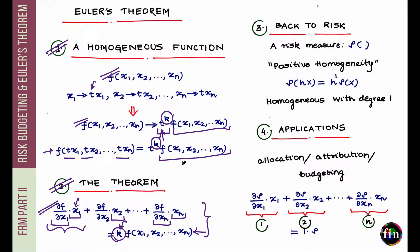This gives us two equivalent ways of expressing homogeneity. Now let's come back to financial risk management. Go back to the sections on coherent risk measures. A risk measure rho is coherent if it satisfies four conditions: monotonicity, sub-additivity, translational invariance, and — importantly in this context — positive homogeneity.